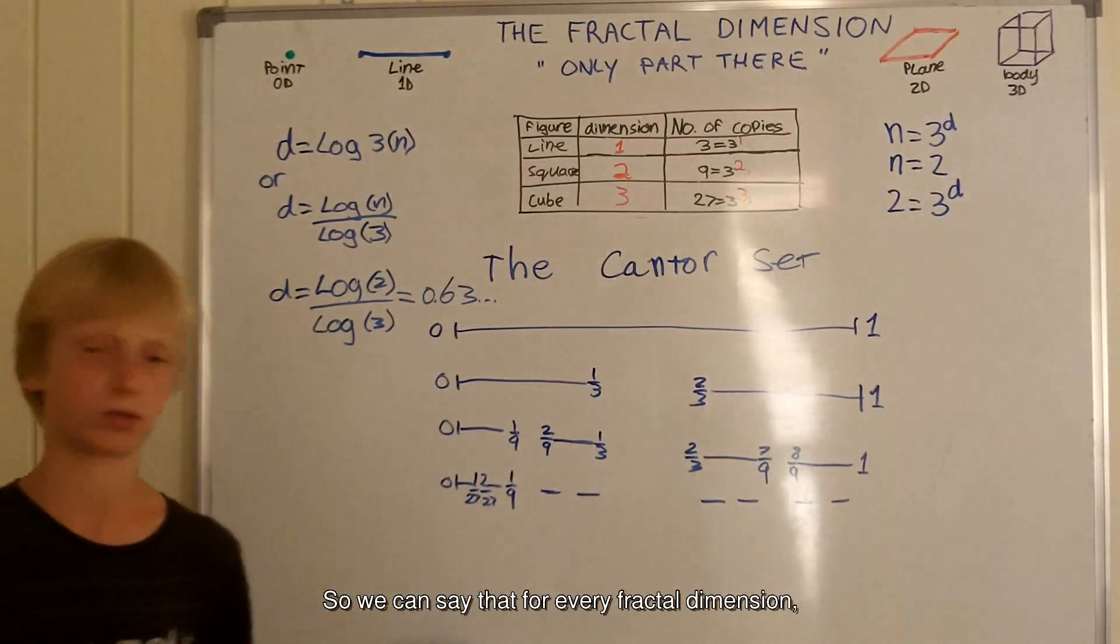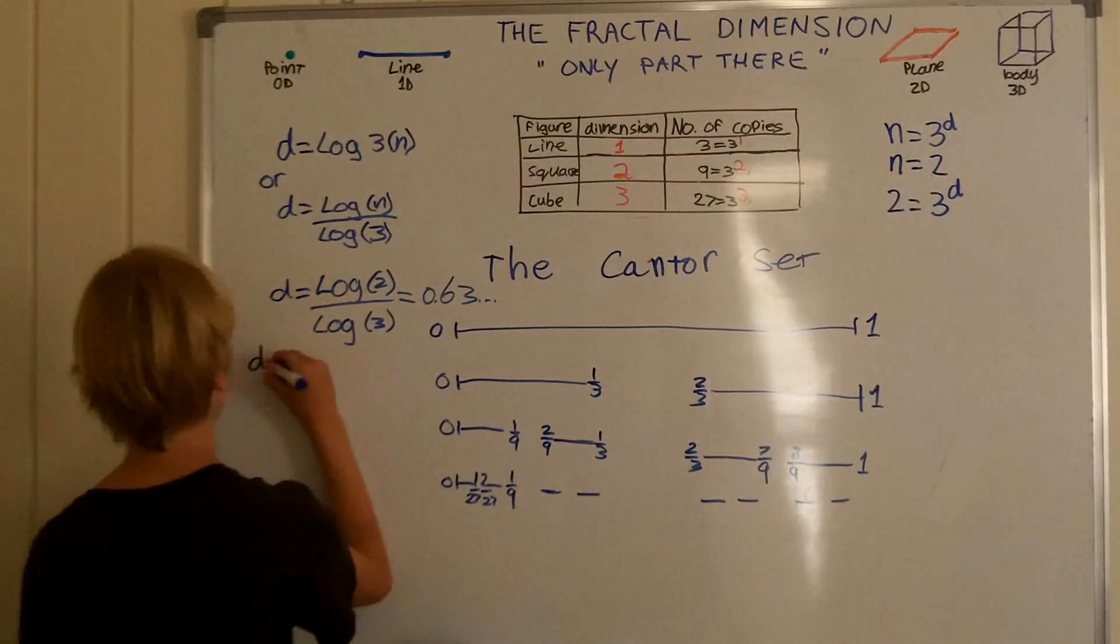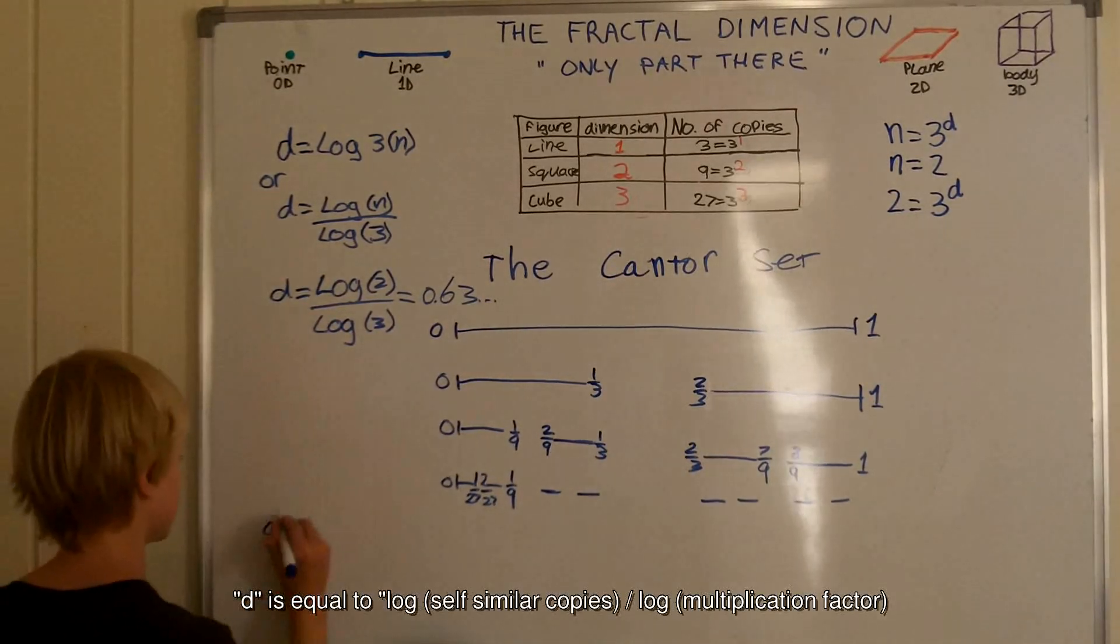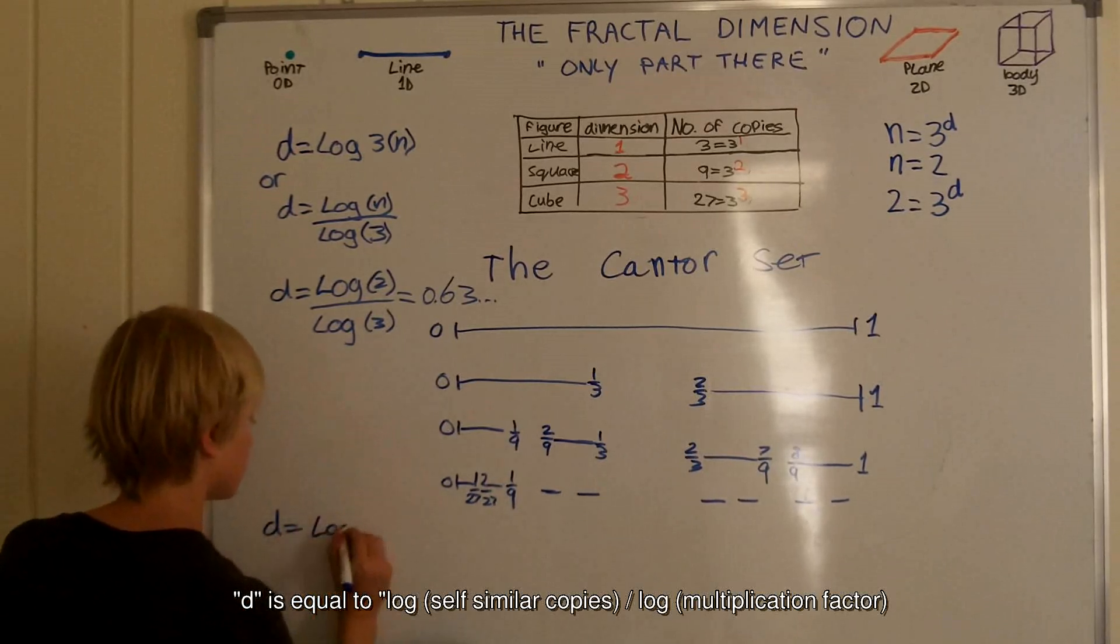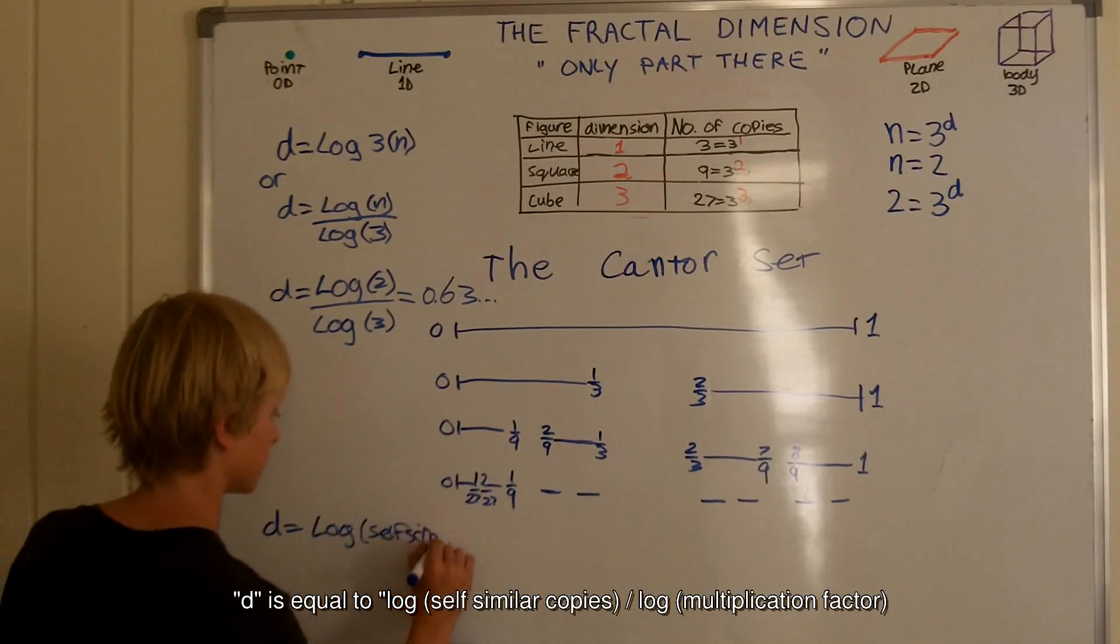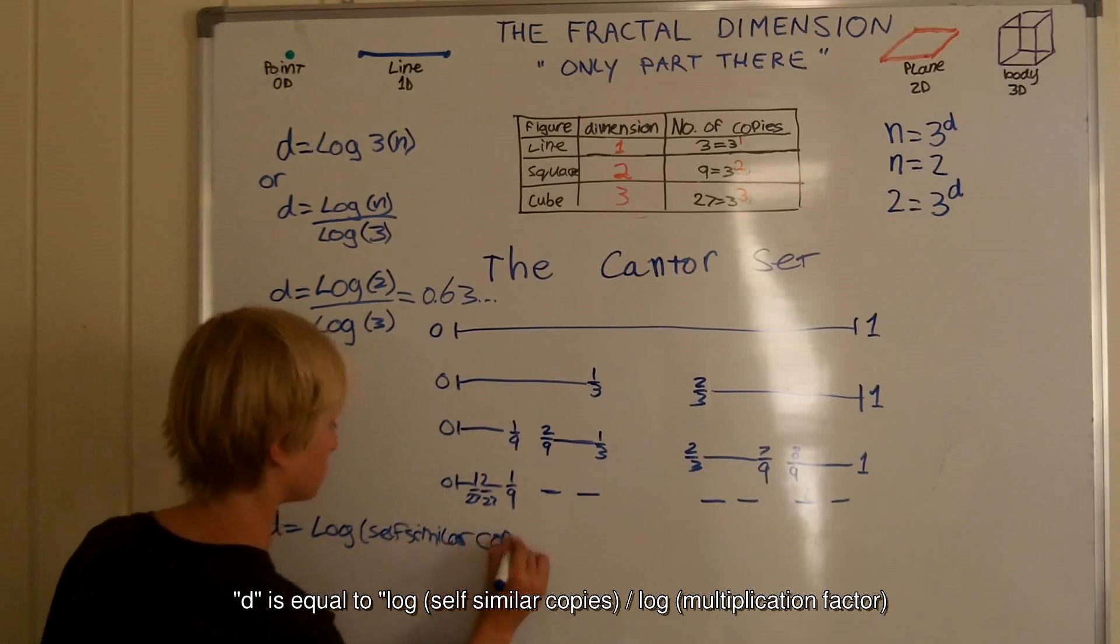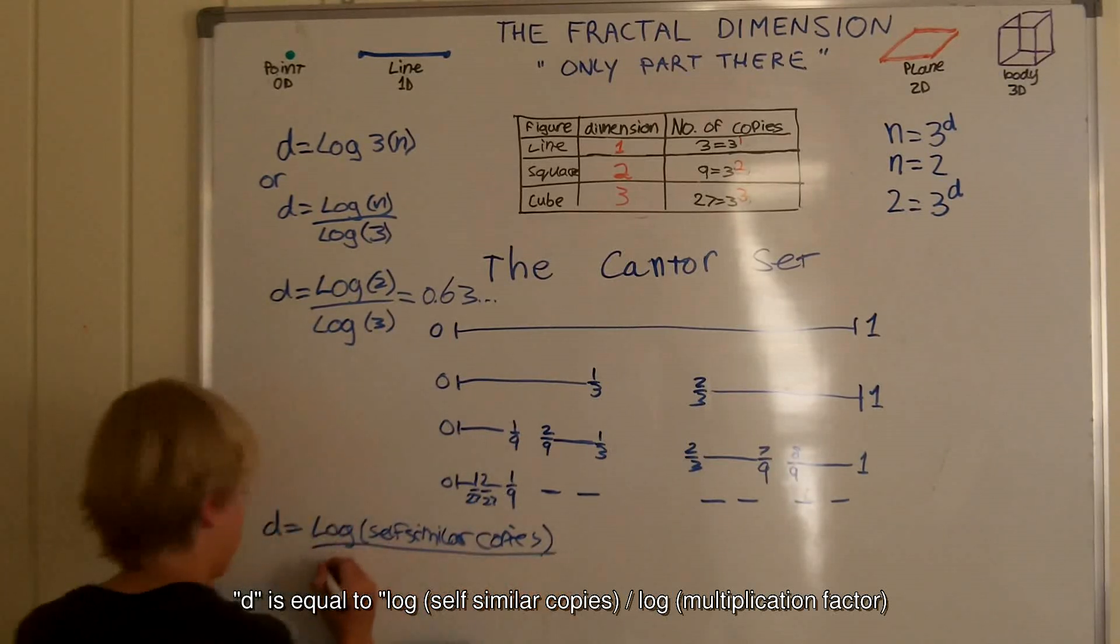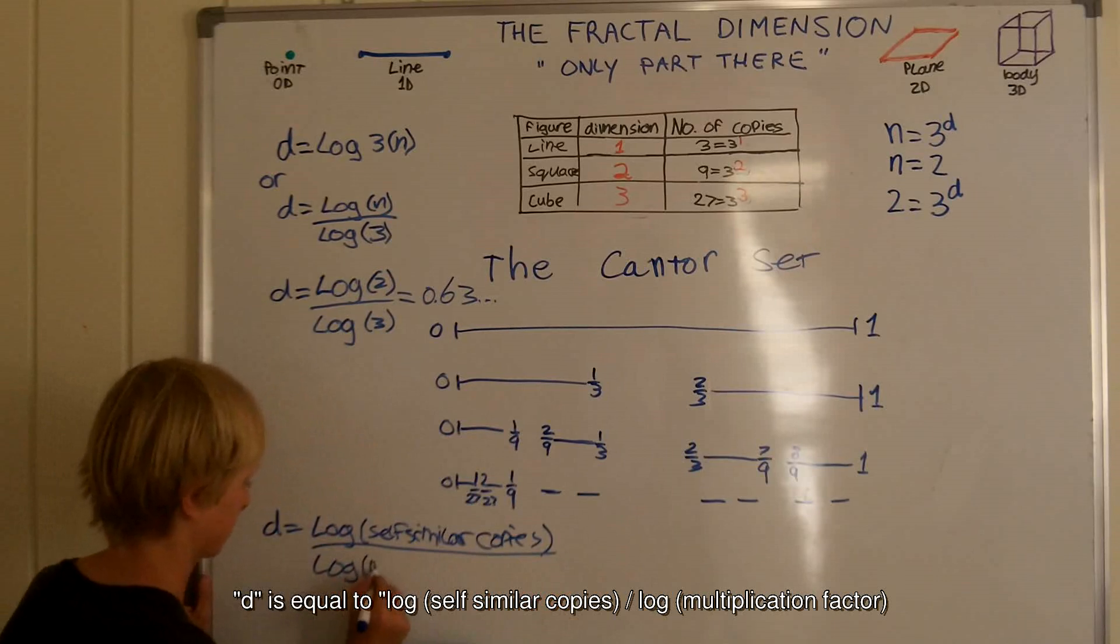We can say that for any fractal dimension, d is equal to the log of the self-similar copies divided by the log of the multiplication factor.